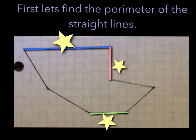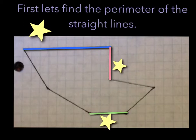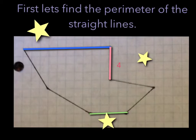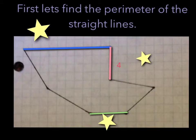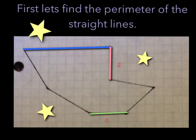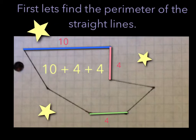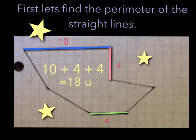The blue side, if you count it up, is 10 units. The pink side is 4 units, and finally the green side is also 4 units. If you add 10 plus 4 plus 4, the answer is 18 units.